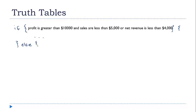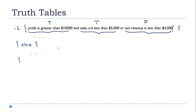And if it doesn't meet those conditions, then do something else — for example, flag it as underperforming, let management know, and tell them what they need to do to fix the situation. So when the program actually runs, it might have a circumstance where the profit is greater than $10,000, so that statement is true. Sales were less than $5,000, but net revenue was not less than $4,000 — so the first two statements are true and the third one is false. Now the program has to decide, based on these three results, whether the entire compound statement is true or false — because if it's true it goes into the first branch, and if it's false it goes into the second.